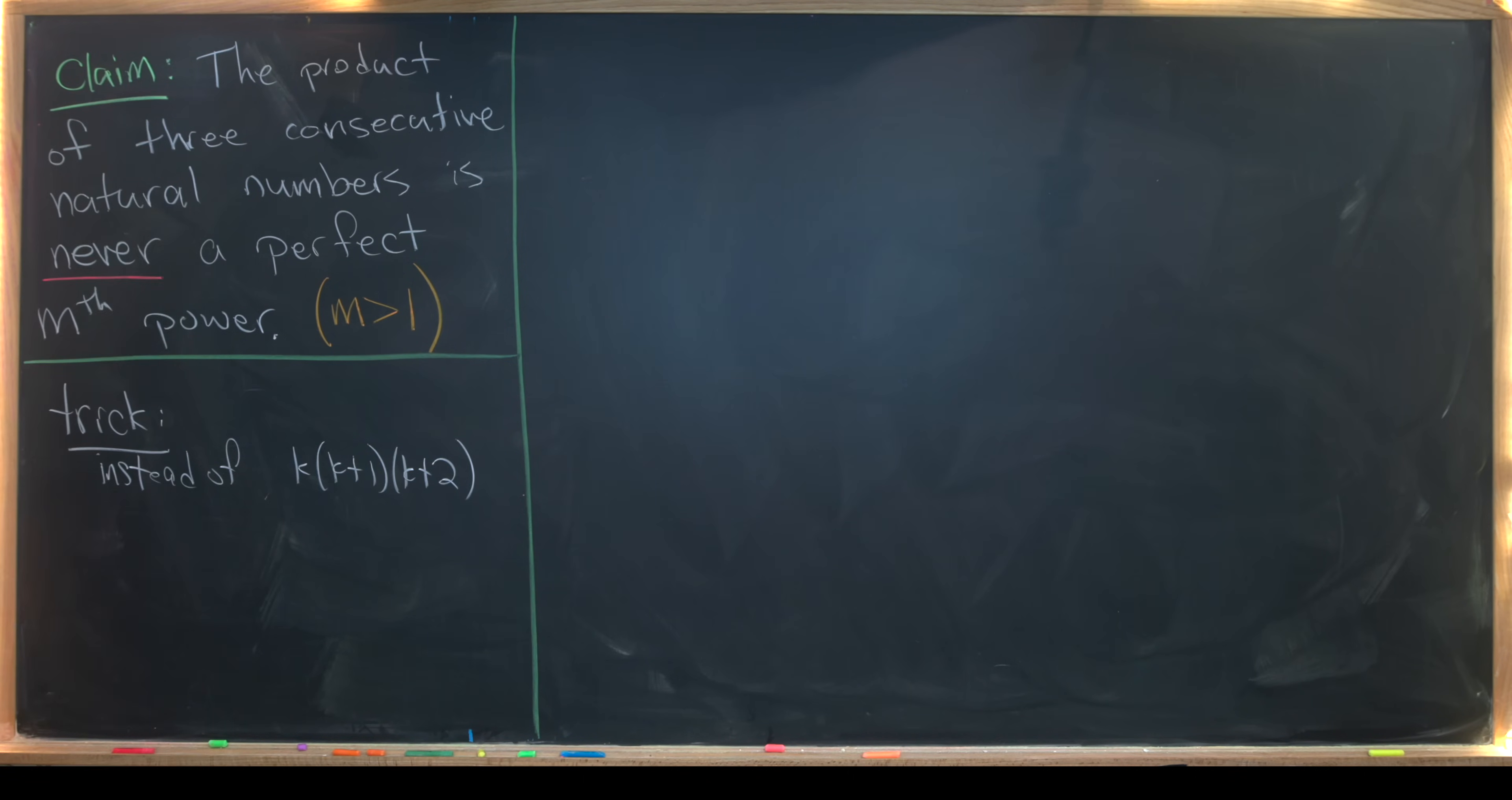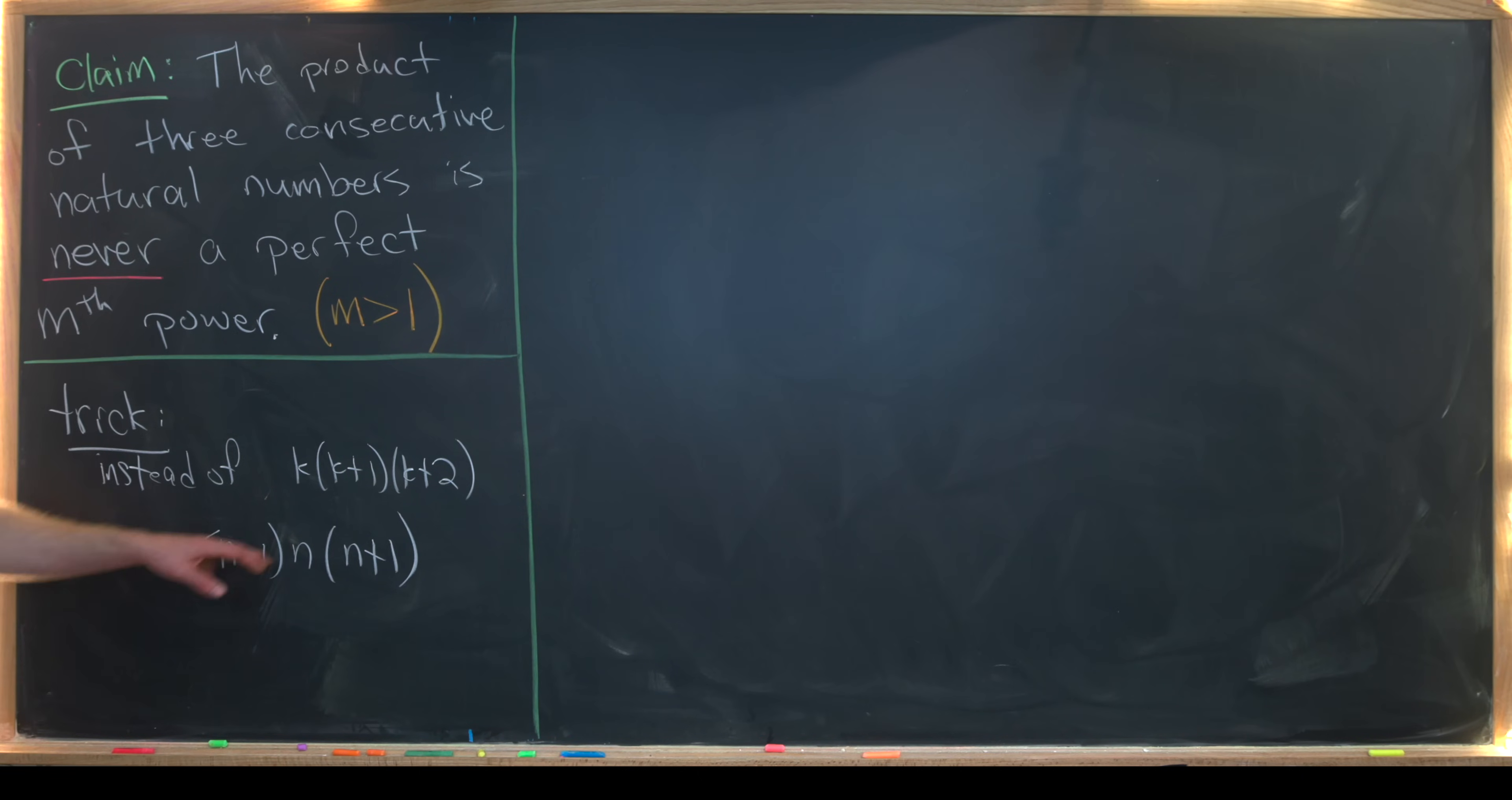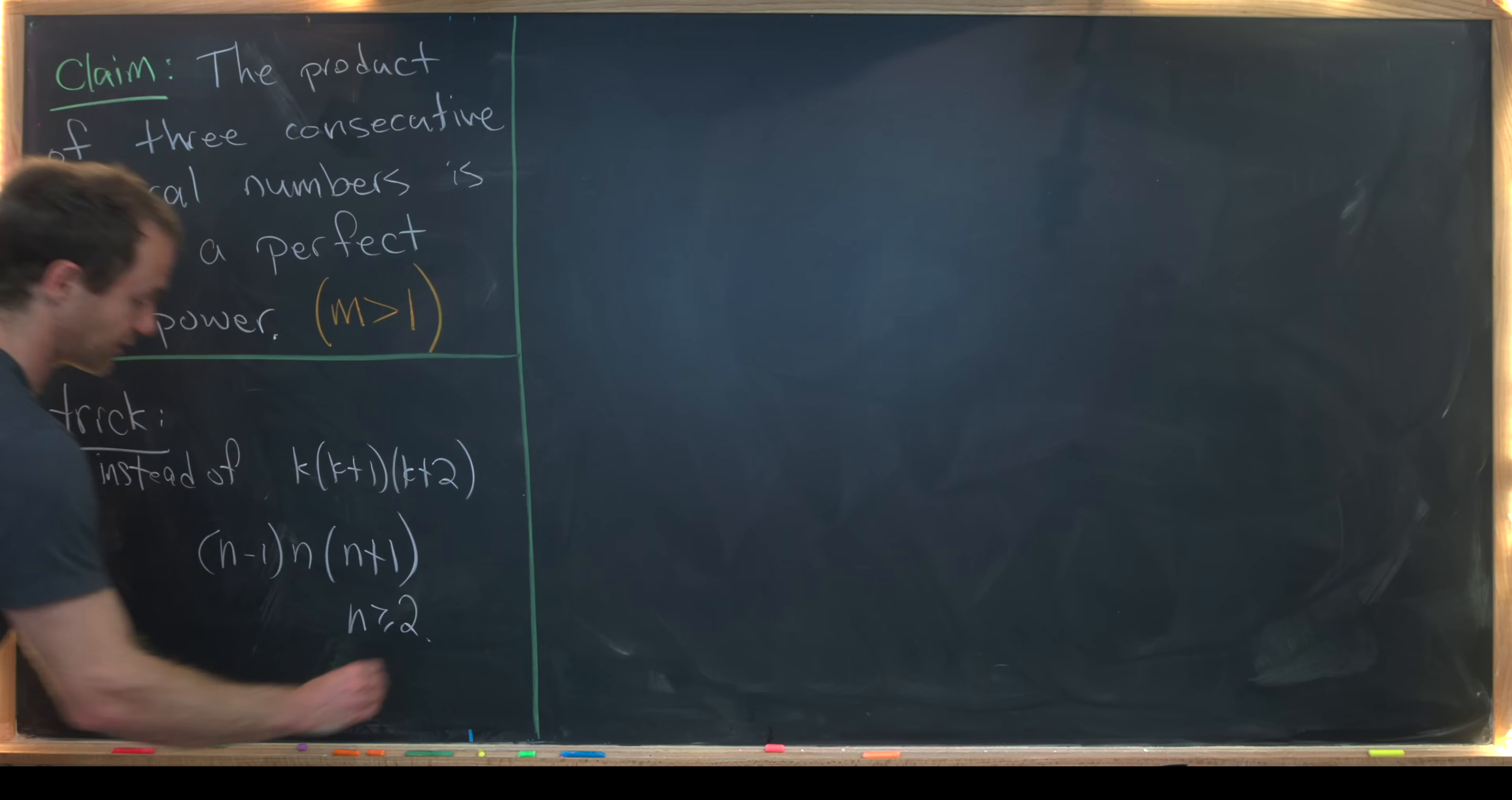that's most definitely the product of three consecutive natural numbers, we'll write n minus 1 times n times n plus 1. Notice that's also three consecutive numbers, and they're natural numbers if n is bigger than or equal to 2, because that makes n minus 1 bigger than or equal to 1.